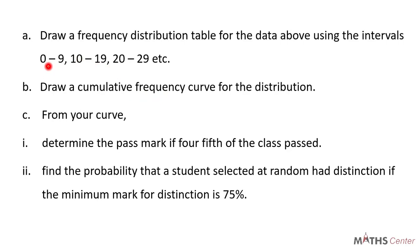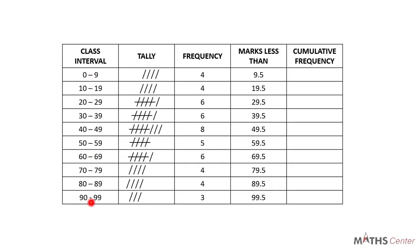We have been given the intervals 0 to 9, 10 to 19, 20 to 29, etc. So I have the table here. We have the class intervals 0 to 9, 10 to 19, 20 to 29, 30 to 39, and it continues up to 90 to 99. These are the tallies and these are the frequencies. I've already explained how to do the tally for raw data like this in the previous videos, so these are the frequencies we obtained.